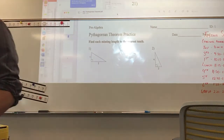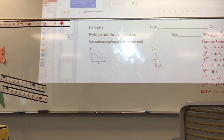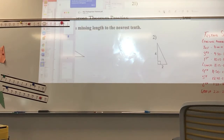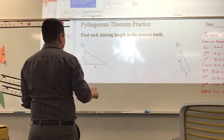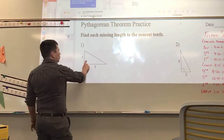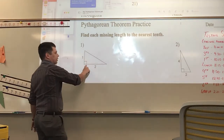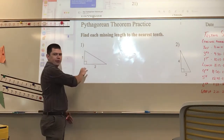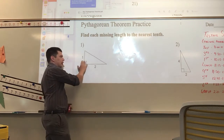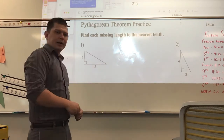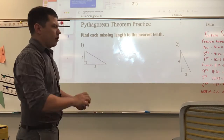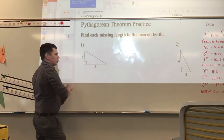He figured out that when you're dealing with a right triangle — right triangles are triangles that have one right angle. One of their angles is 90 degrees, and you can know that because of this little box.